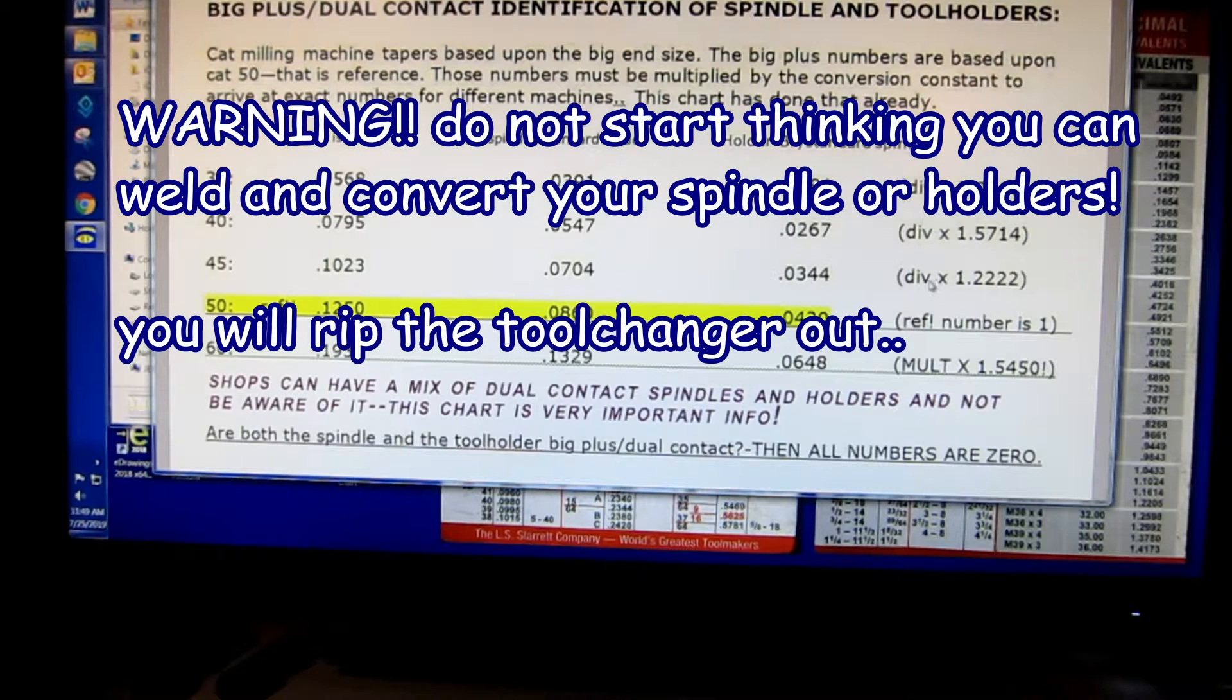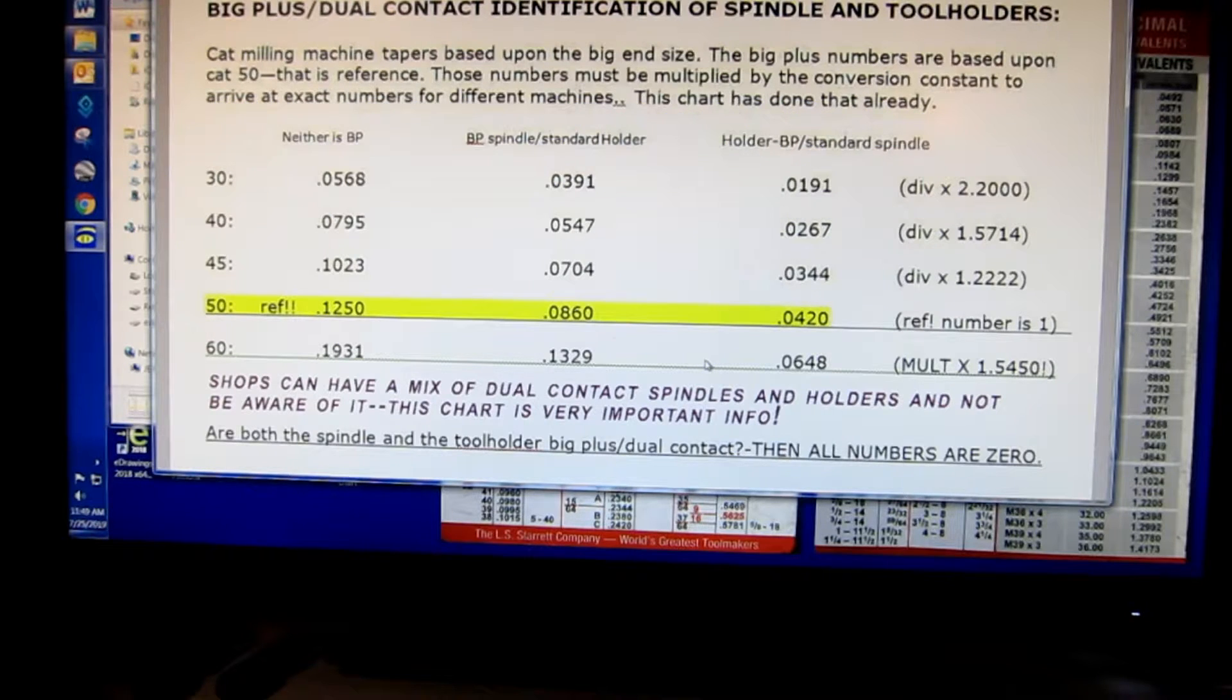But this is hugely important because I came up with a ratio so that no matter what the machine, you can come up with each combination to tell exactly what you've got, both spindle and the holders. See, I put over a division times 1.222, 1.57. So this right here, you definitely want to save that.